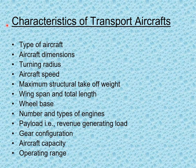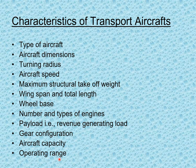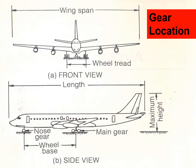Characteristics of transport aircraft include: aircraft dimensions, turning radius, aircraft speed, maximum structural takeoff weight, wingspan, total length, wheelbase, number and type of engines, payload (revenue generating load), gear configuration, aircraft capacity, and operating range. The main gears are under the wings and the nose gear is at the front.